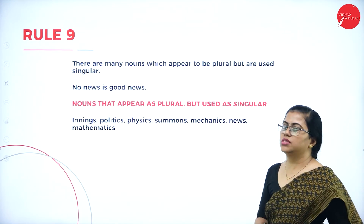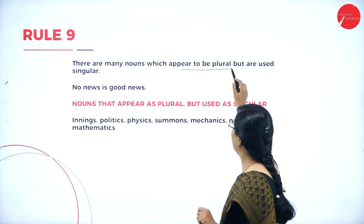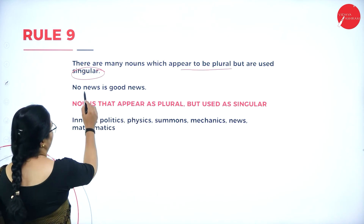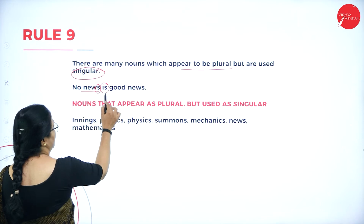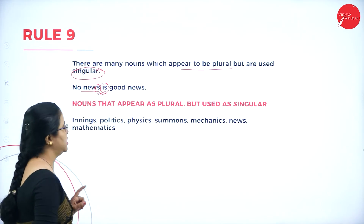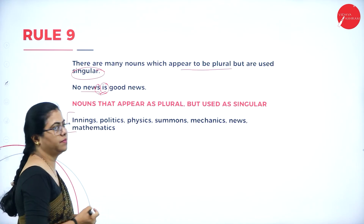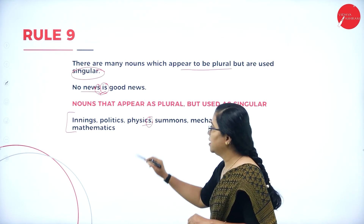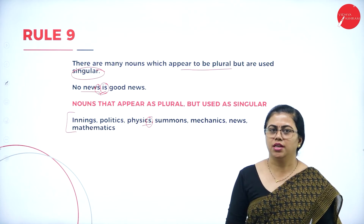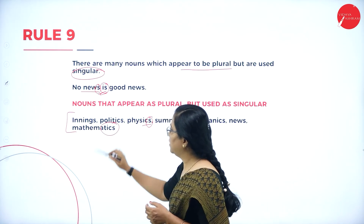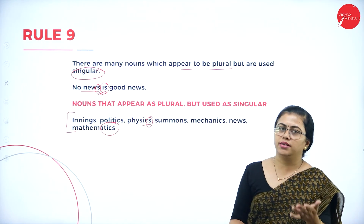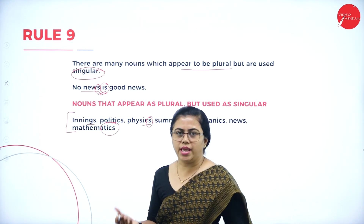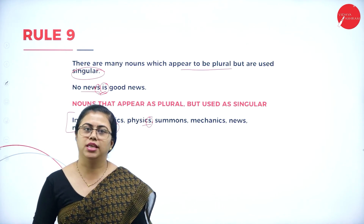Rule 9: Some nouns appear to be plural but are always used as singular. For example: 'No news is good news' — 'news' has an 's' but is treated as singular. Other examples include 'physics,' 'mathematics' — these are names of subjects, so use singular verbs. 'Innings' also, whether first or second innings, is treated as singular only.